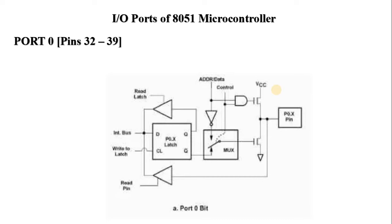To use port 0 as an output port, 0 is written to the D flip-flop with the control signal set to 0. This enables the lower FET and disables the upper FET, connecting the pin to ground to write a 0 to the output device. To write a 1, the microcontroller writes 1 to the D flip-flop, driving the pin to a high impedance state, so a pull-up resistor is connected to pull the value to +5V (logic 1). For external memory access, the control bit is set to 1, the ALE pin latches the address, and port 0 is then used for data transfer.